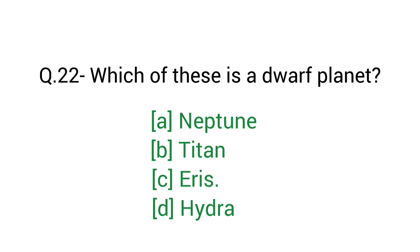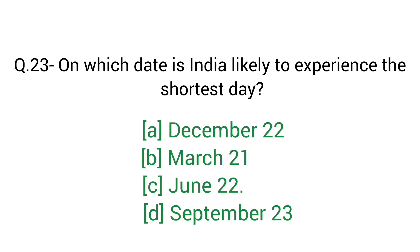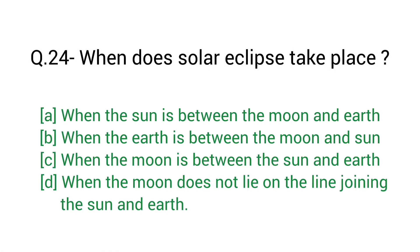Question number 22: Which of these is a dwarf planet? Right answer C — Aries. Question number 23: On which date is India likely to experience the shortest day? Right answer A — December 22. Question number 24: When does a solar eclipse take place? Right answer C — when the moon is between the sun and Earth.